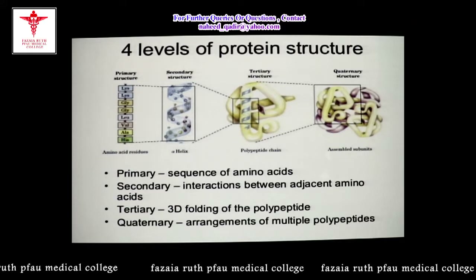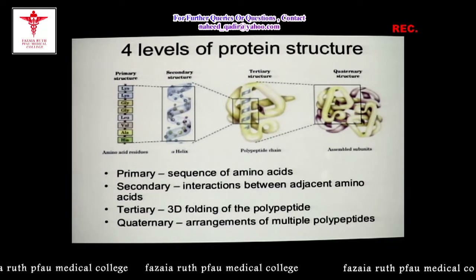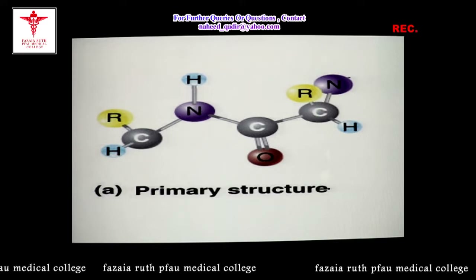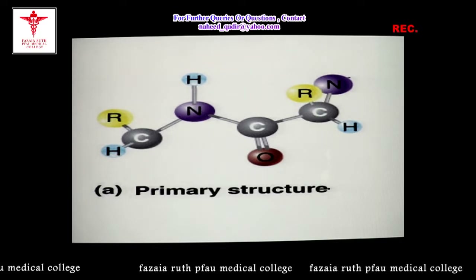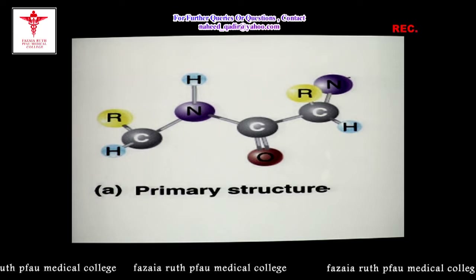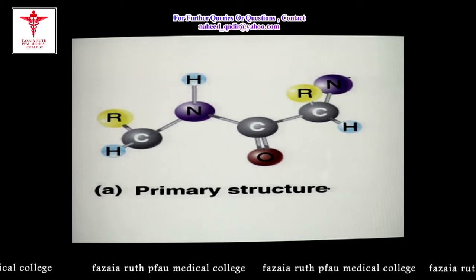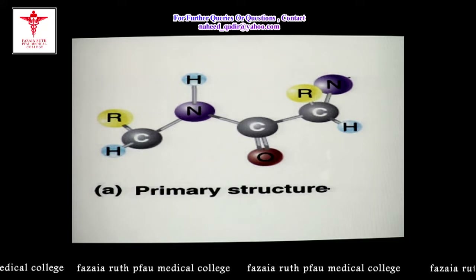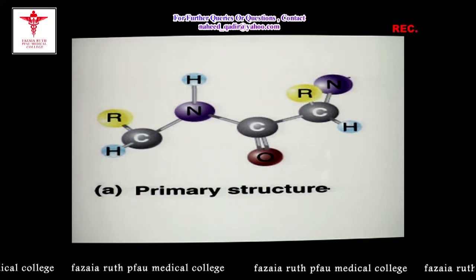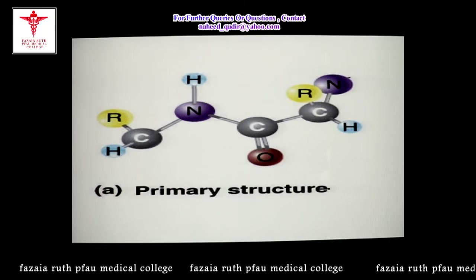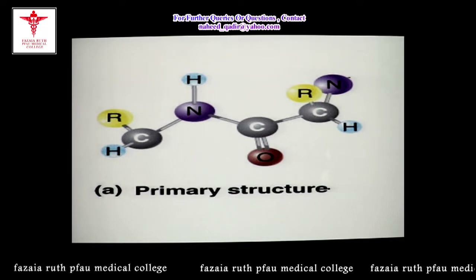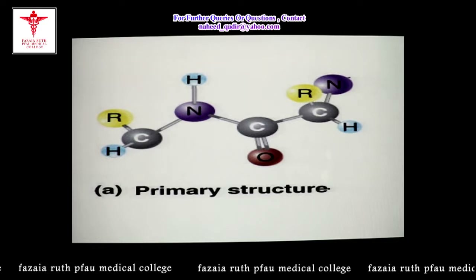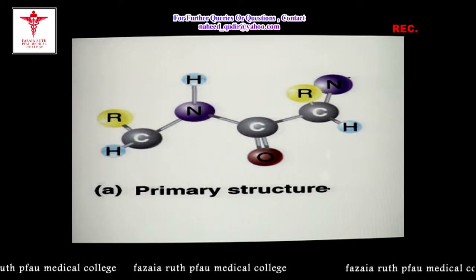These are called primary, secondary, tertiary, and quaternary structure. The primary structure of protein is simply the number and the sequence of amino acids in a polypeptide chain — a single polypeptide chain. These amino acids are linked by peptide linkage, which is a covalent bond.